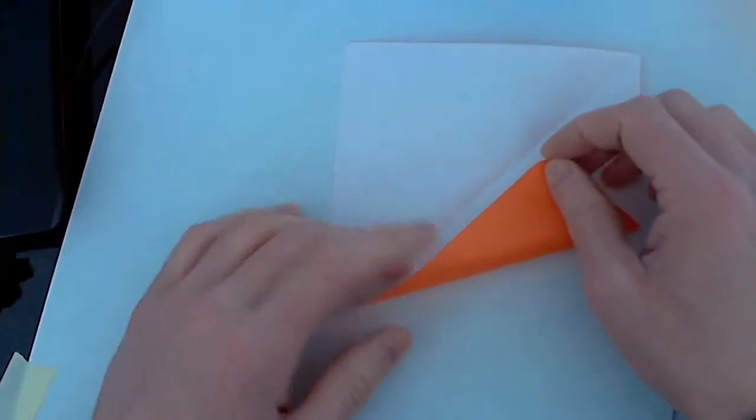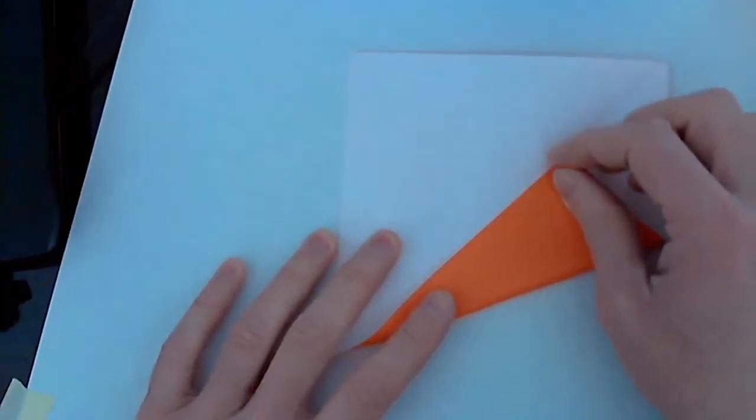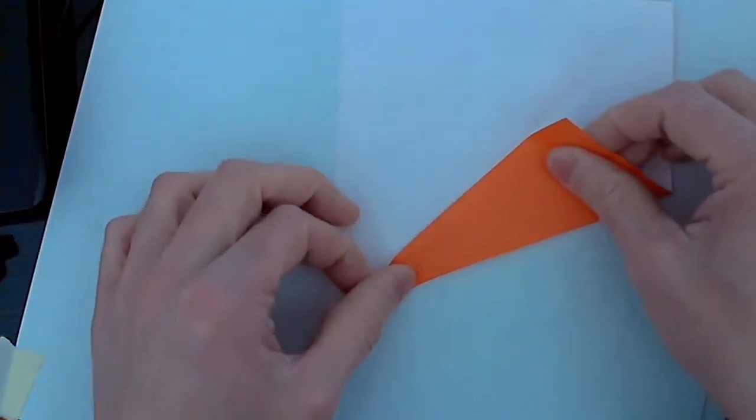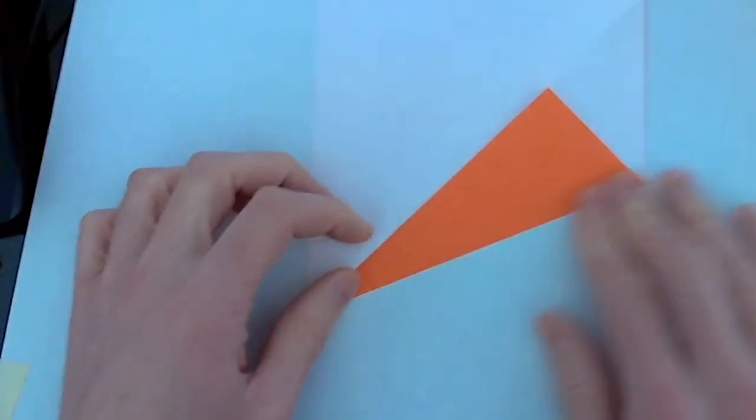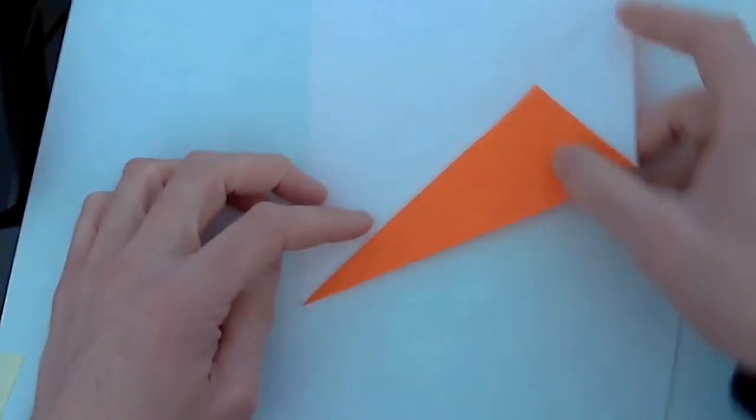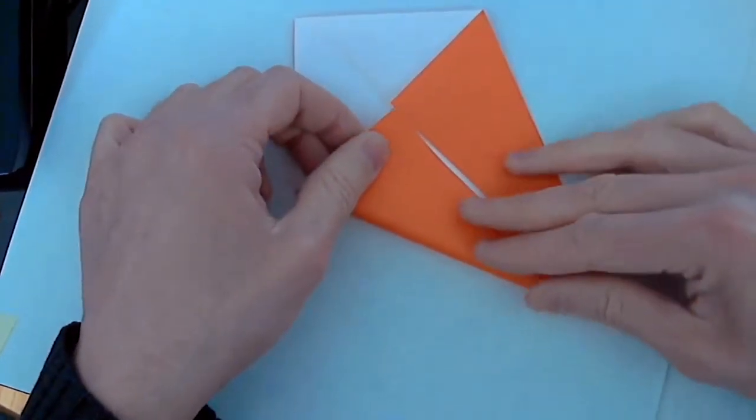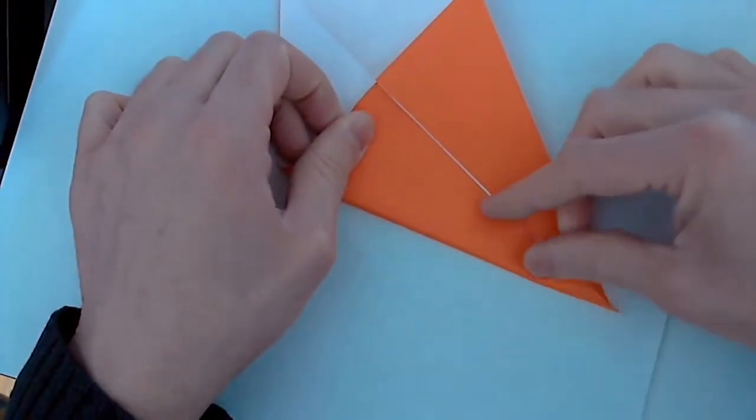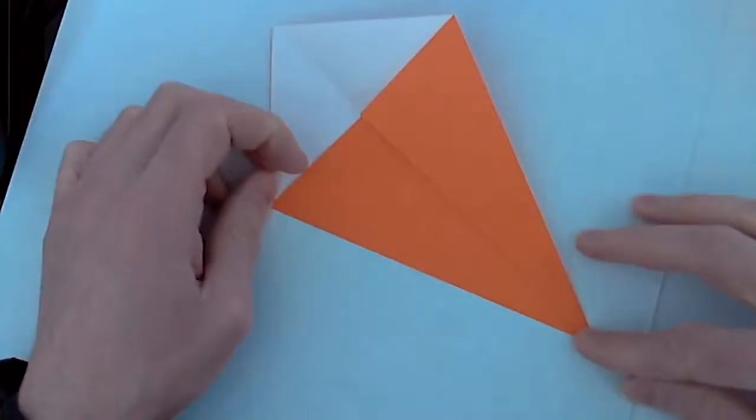Take the first corner and fold it towards the center crease. This is going to be a kite base. Notice when I fold it, it makes a nice triangle down at the bottom. Do the same thing on the other side, making it symmetrical. Now it looks like a kite.